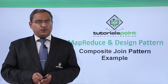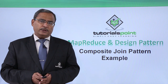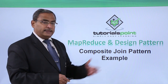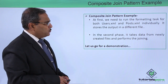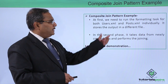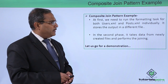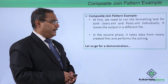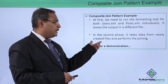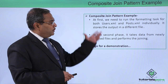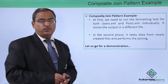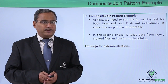In this video we are going to discuss a composite join pattern example. We shall implement this join pattern. Let us get the assignment first. We need to run the formatting task for both XML files — users.xml and posts.xml — individually. It stores the output in a different file, and then in the second phase it takes the data from the newly created files and performs the joining. We are dividing our assignment into two tasks and executing them one by one.